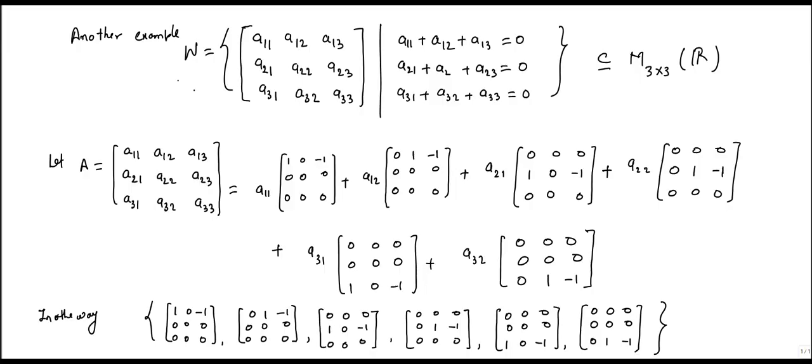Now, let us see another example. We have given a set W, which is a collection of 3×3 matrices in which each has the property that entries in the first row all sum up to 0. That is, a11 + a12 + a13 = 0.